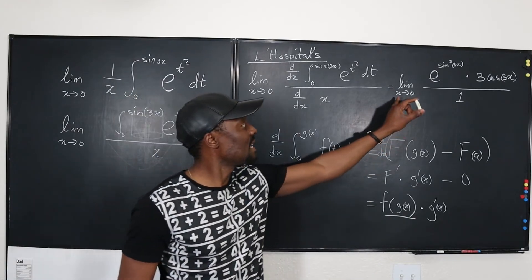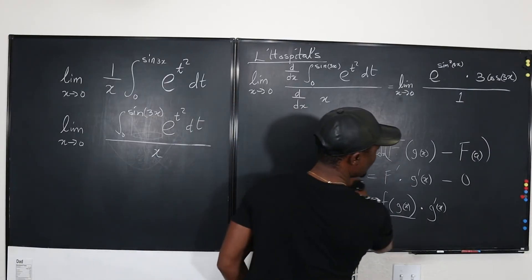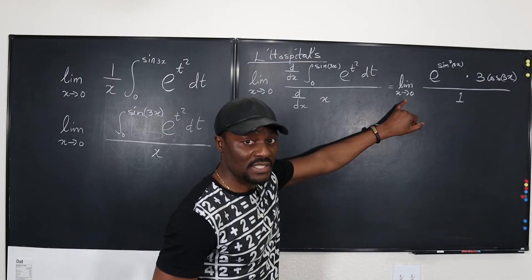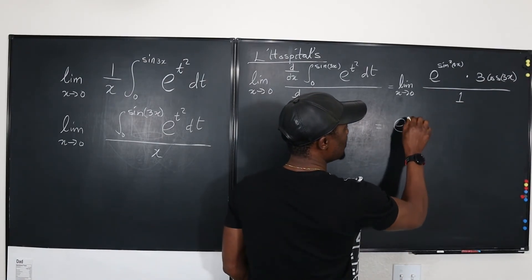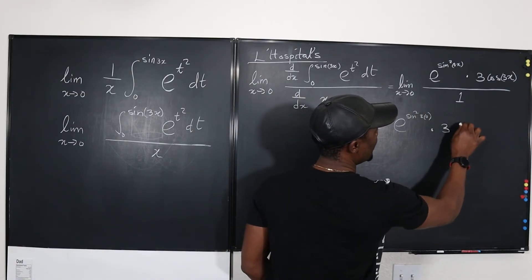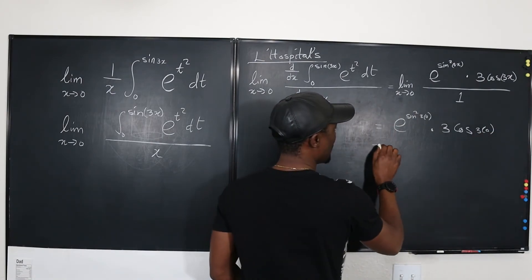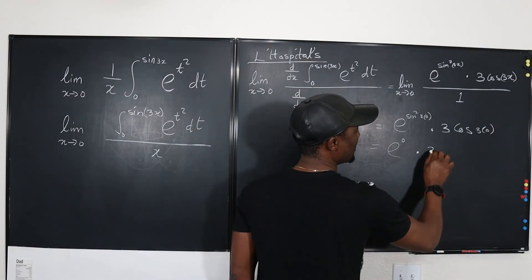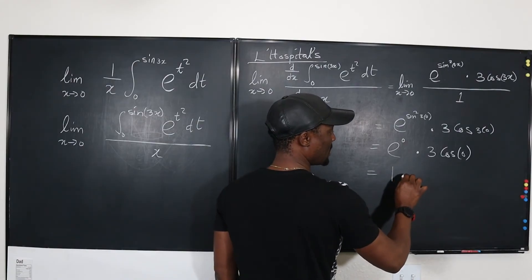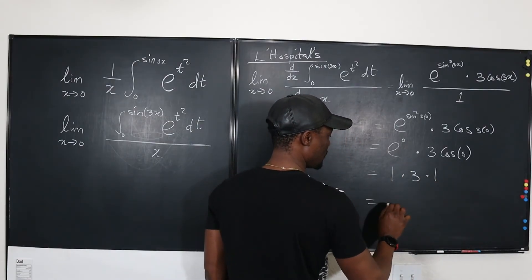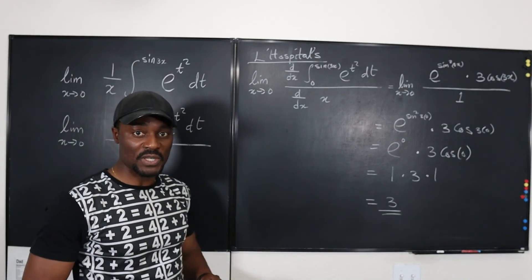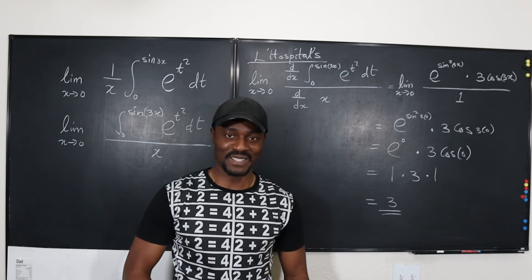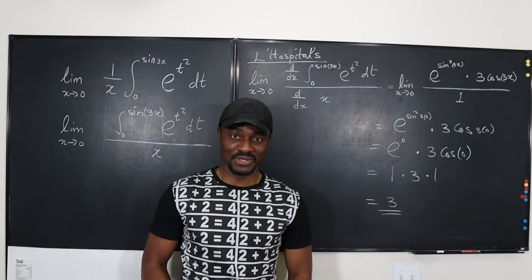Now I just need to evaluate at x equals 0. Plugging in 0: e to the sine squared of 3 times 0, times 3 cosine of 3 times 0. Sine of 0 is 0, so sine squared 0 is 0, and e to the 0 is 1. Then 3 times cosine of 0 is 3 times 1, which is 3. So this limit is actually 3. Hope you learned something in this video. If you did, like, share, and subscribe, and leave a comment. I'll see you in the next video — don't stop learning. Those who stopped learning have stopped living.